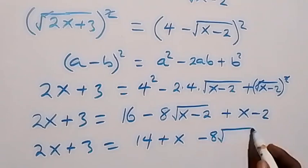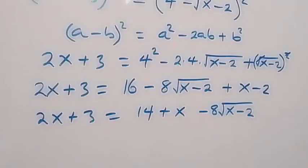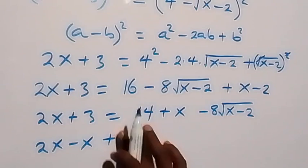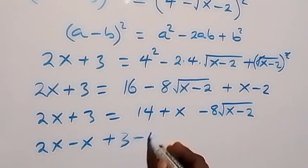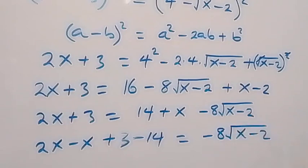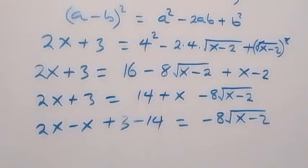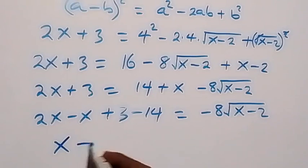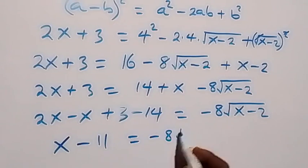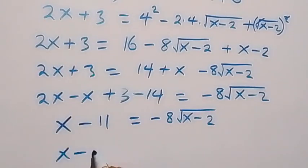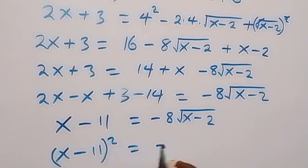Let's take 14 and x to this side. This becomes: 2x minus x, plus 3 minus 14, equals negative 8 times root of x minus 2. So x minus 11 equals negative 8 times square root of x minus 2.